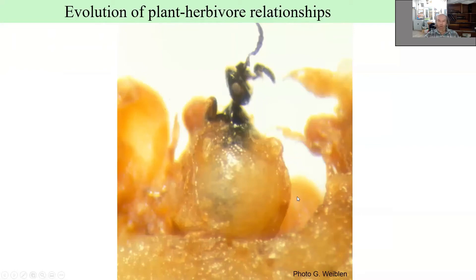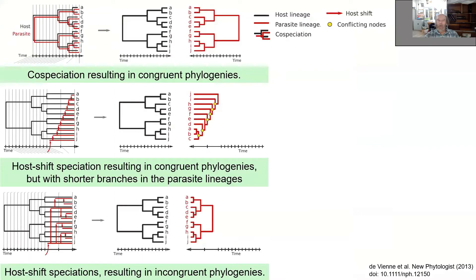Let's start with evolutionary scenarios. You are probably familiar with this because it's not specific to herbivores, but generally applies to the evolution of two interacting lineages. You can have host and parasite — in this case herbivore — which can be cospeciating, where every split of the lineage is in parallel at the same time, and you end up with ideally mirror-like phylogenies for the host and herbivorous lineages.